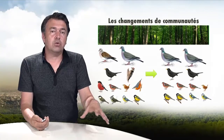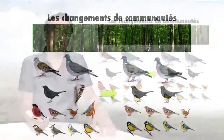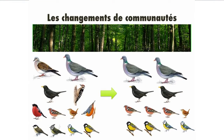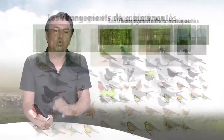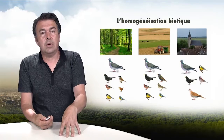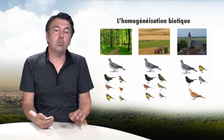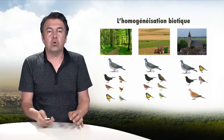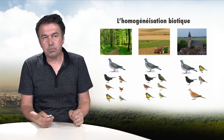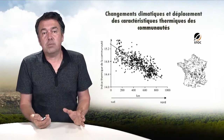Within a local community — for example a forest community — there is a shift from a large number of species with few individuals, as was the case in an average French forest 30 years ago, to perhaps fewer species but the same number of individuals, with generalists having replaced specialist species. This type of reorganization within bird communities can be observed in forests, agricultural land, and built-up areas, with the same generalist species across all these habitats. This is known as biotic homogenization: much greater similarity between communities in different habitats.